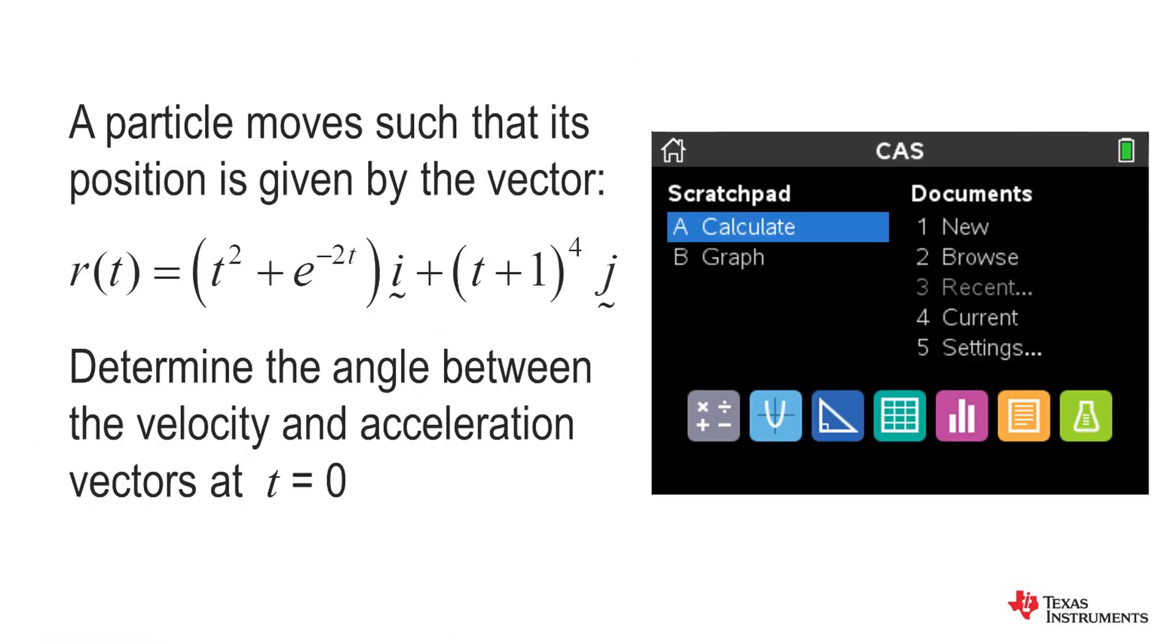The typical vector calculus question: we are given the position vector with two components, x in t and y in t, and we wish to find the angle between the velocity and acceleration vectors when t equals zero.